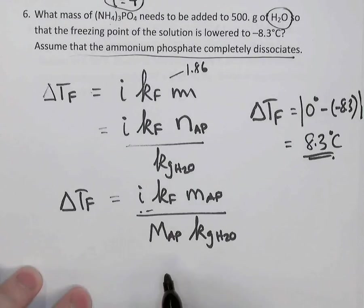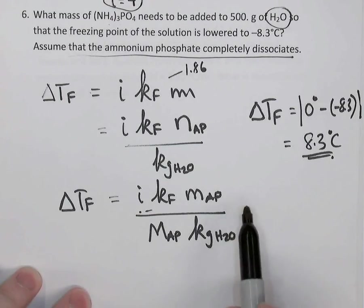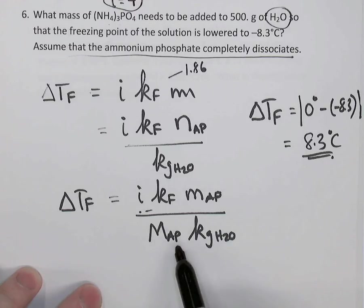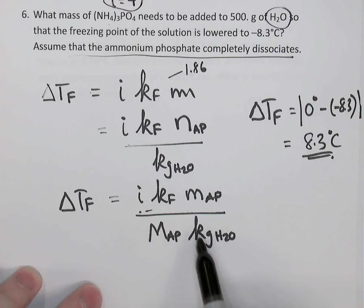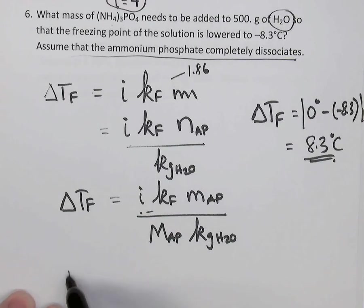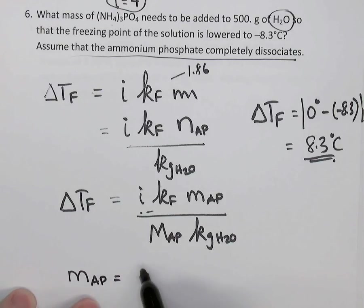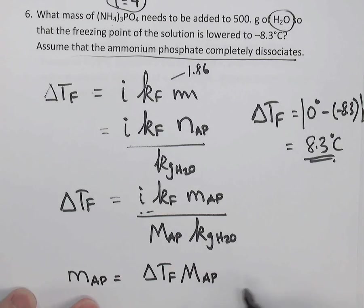So we know delta Tf, we know i, we know Kf, we know the molar mass of ammonium phosphate, we can just look that up, and 500 grams of water, we know how many kilograms of water there are. So let's just rearrange the formula. The mass of ammonium phosphate is equal to delta Tf times the molar mass of ammonium phosphate times the kilograms of water, divided by the Van't Hoff factor and Kf. So now let's substitute into our rearranged formula.